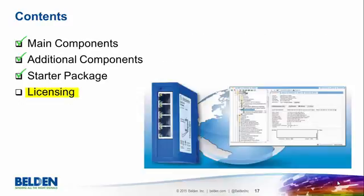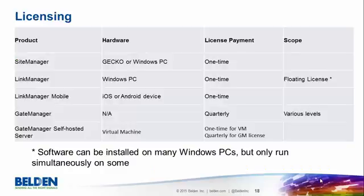Let's look at the licensing options. The site manager license, valid for a Gecko or a Windows PC, is a one-time payment — you buy it once and own it forever. The link manager license is also a one-time payment but works as a floating license: multiple devices can use the same license, but not simultaneously. The license is located on the gate manager; when you connect, it is associated with your PC, and when you disconnect, it returns to the pool for use by a link manager on a different PC.